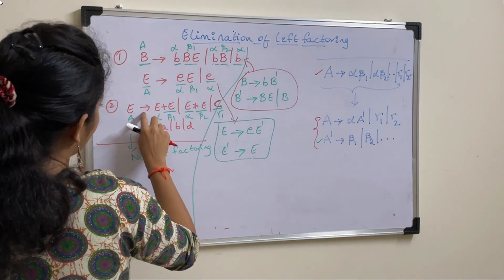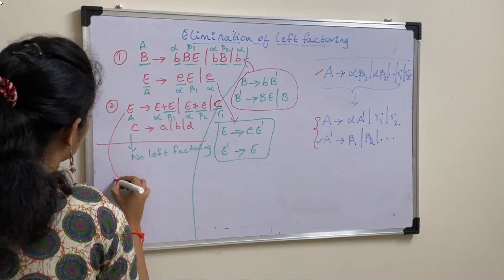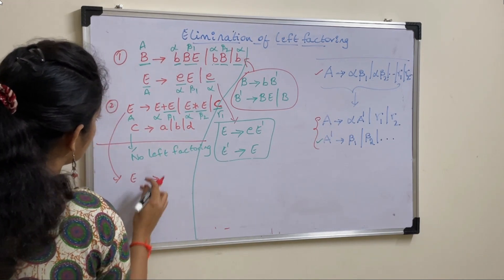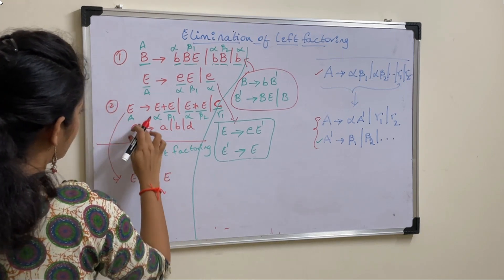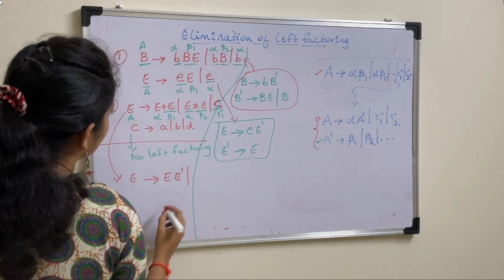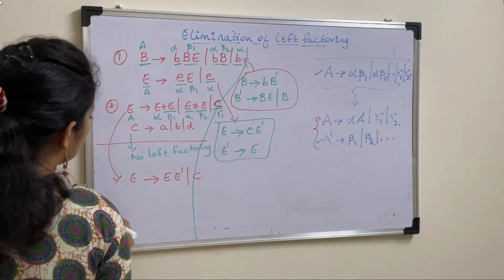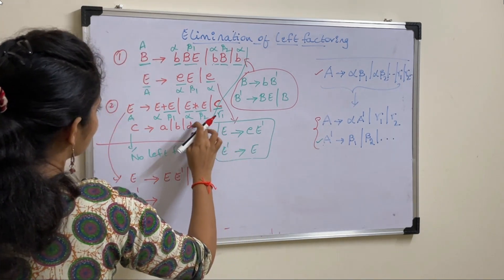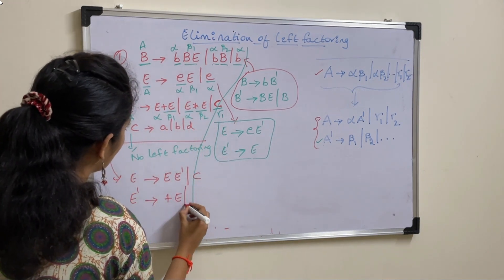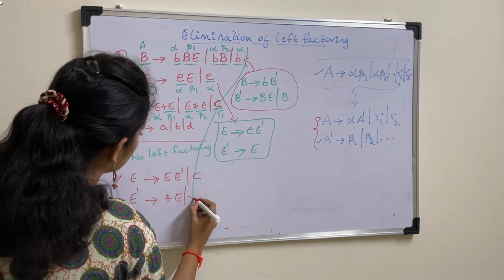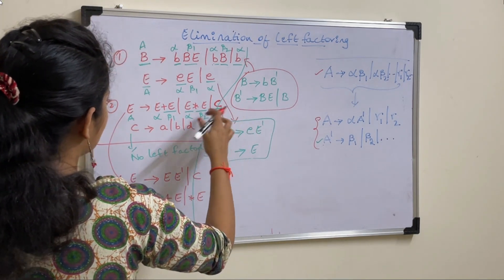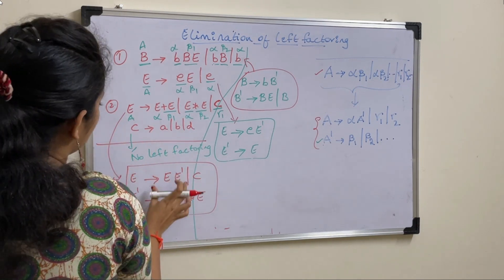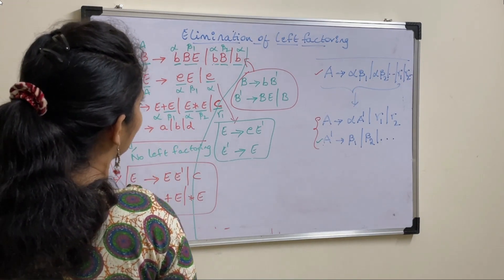Let us write new productions for this one. A derives alpha A-dash. Here A means E, so E derives alpha which is E, and A-dash means E-dash. Or gamma1 is C. Next, the second production is A-dash: E-dash derives beta1. Beta1 is plus E. Or beta2, which is star E. There is no beta3. So this is the final grammar for the production containing left factoring.